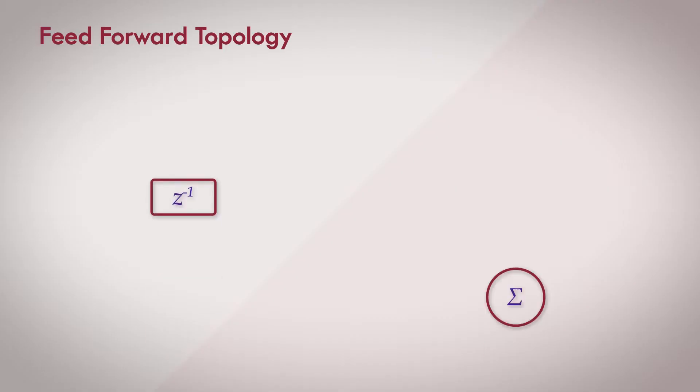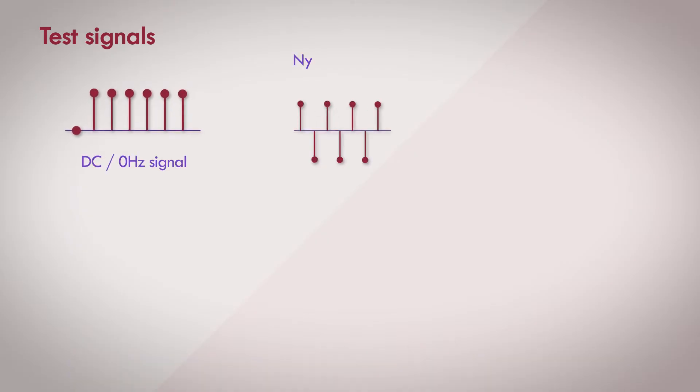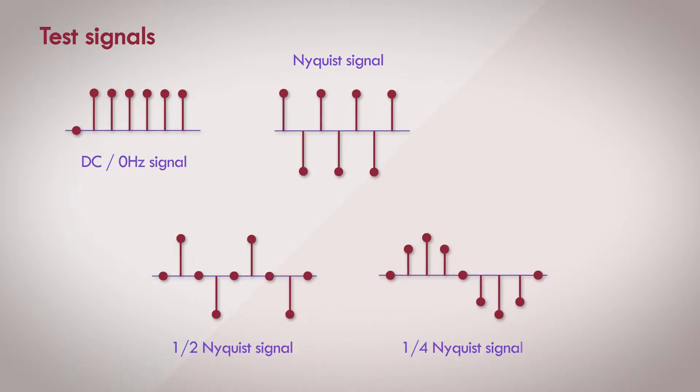Let's continue our analysis of the feedforward filter that we were discussing a couple of videos back. We had subjected the filter to a few different test signals - signals of particular frequencies like 0Hz, the Nyquist, the half Nyquist and the quarter Nyquist frequencies.